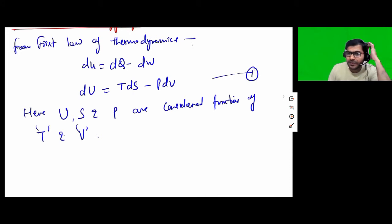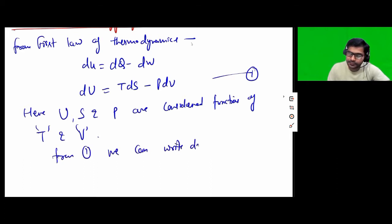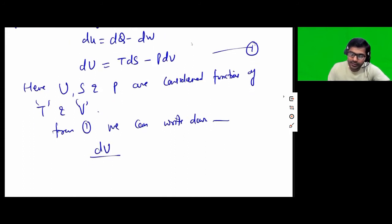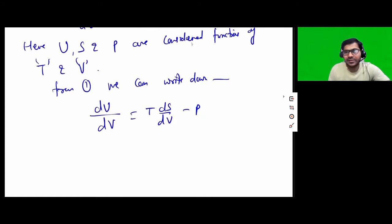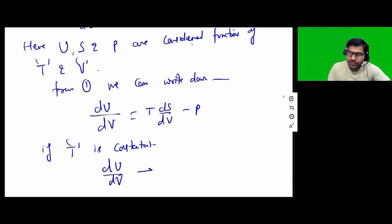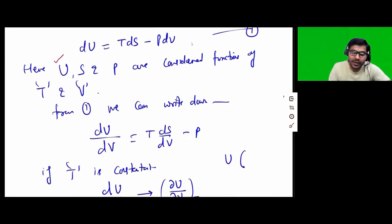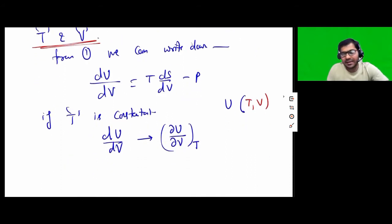U, S, and P can be thought of as functions of temperature and volume. In that case, we can write down that dU over dV is equal to T times dS over dV minus pressure. Now, if we want to consider temperature to be constant, our dU over dV can also be thought of as del U by del V at constant temperature. Because U is a function of temperature and volume, at constant temperature dU by dV is as good as del U by del V at constant temperature.